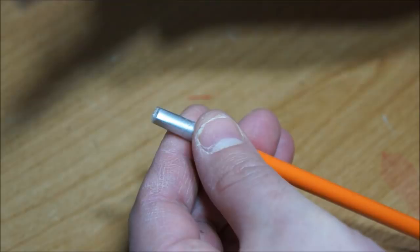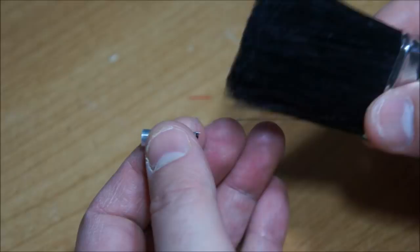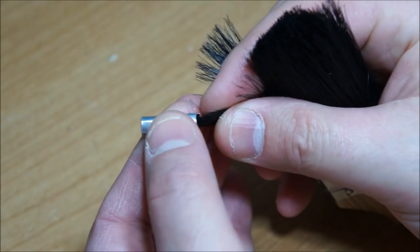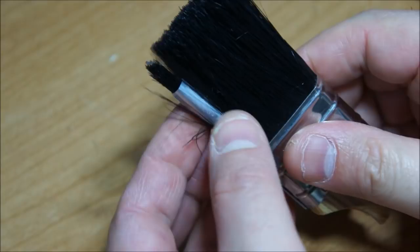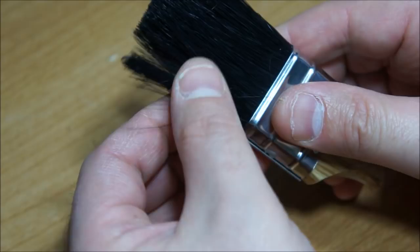To get the bristles in I'm just going to take a bunch from my paint brush and just feed it into the funnel. And then pushing it down, I'm going to trim away with the scissors as close to the base as I can.